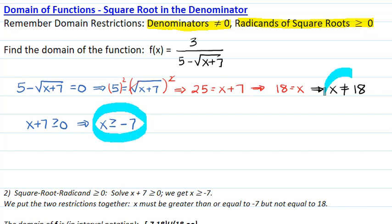Then we have to put these restrictions together. Graphically, this is negative 7 and this is 18, and x must be greater than or equal to negative 7.